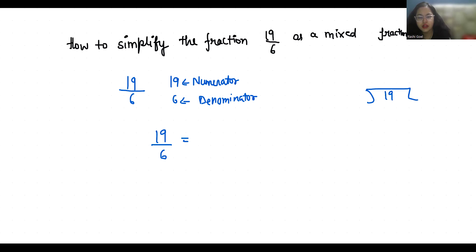So 6 times 3 is 18, and here is 1. So how can we write? Write the denominator as it is placed. Write the quotient in place of whole number and remainder in numerator.